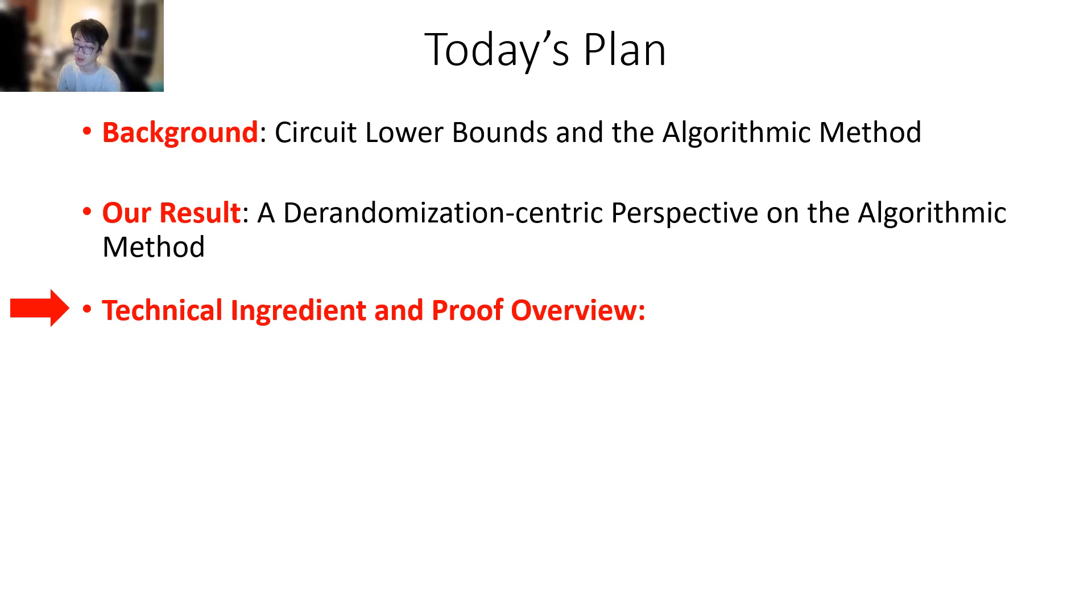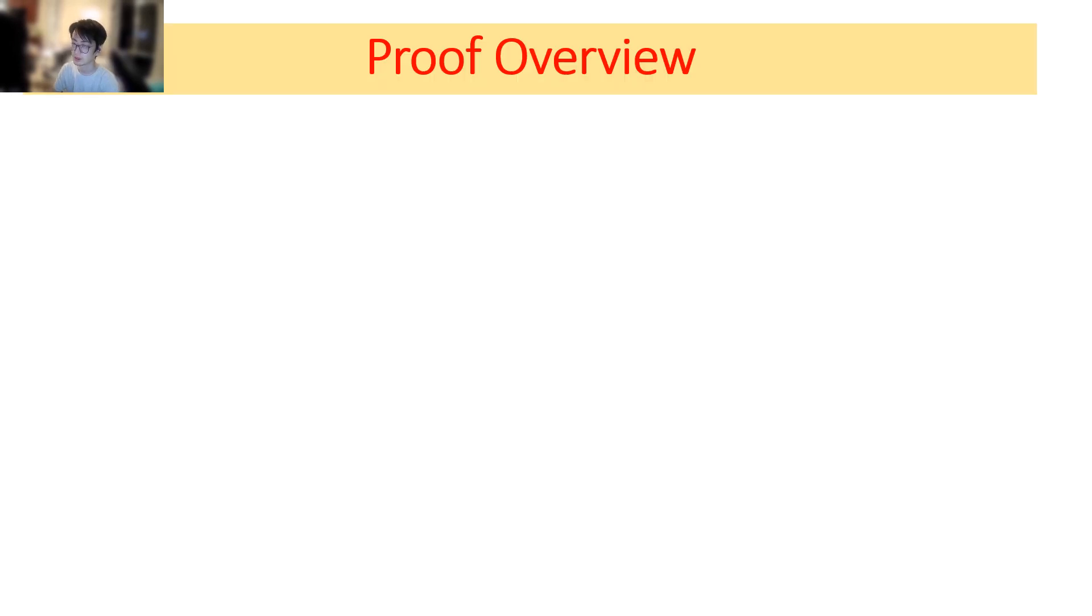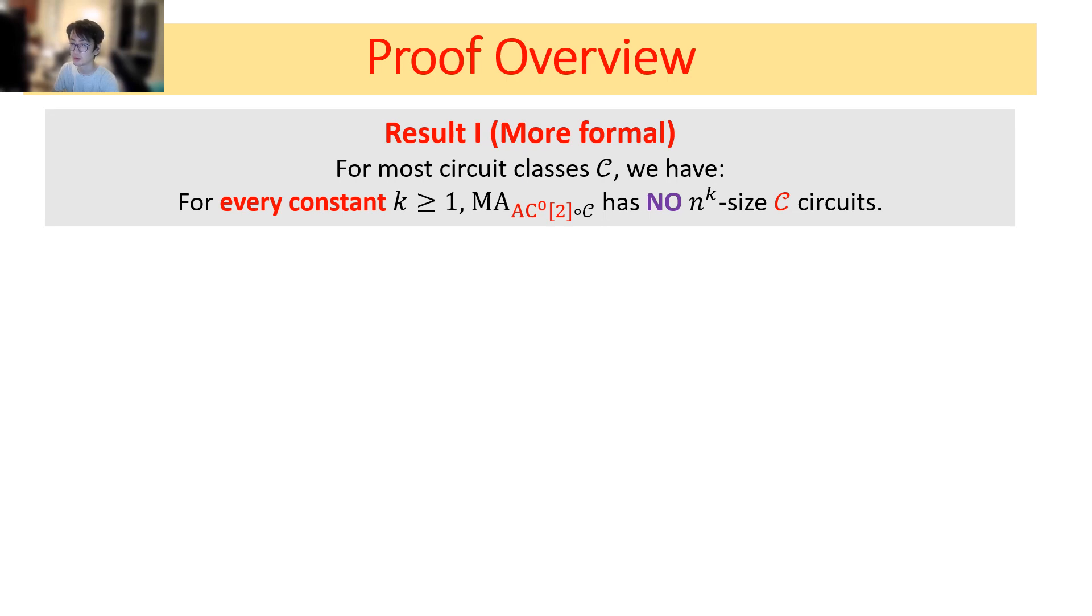Finally, I'm going to briefly talk about the technical ingredients and give a proof overview. Recall that we want to prove our result 1, that MA_{ACC^0} has no n^k size ACC^0 circuit. In fact, we are going to prove a more general result, more formal, that for most circuit class C, we have for every constant k, MA_{ACC^0[2] ∘ C} has no n^k size C circuits. Note that ACC^0 is closed under taking ACC^0[2] at the top, so this implies what we want.